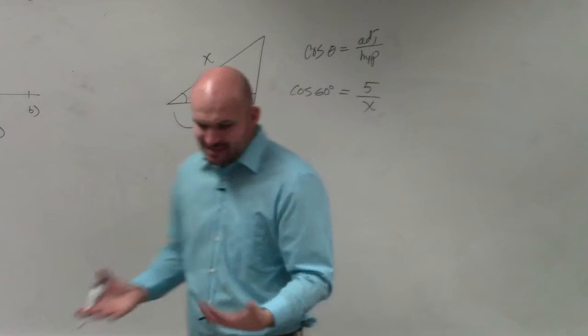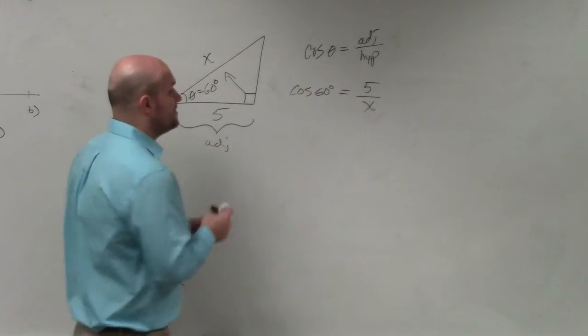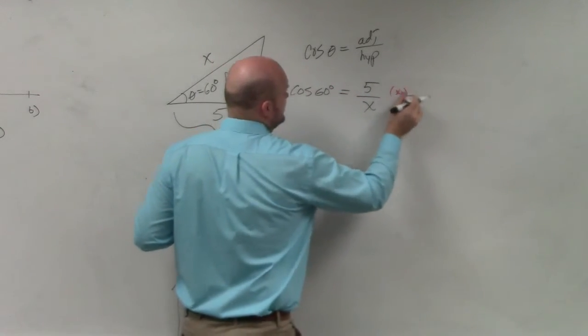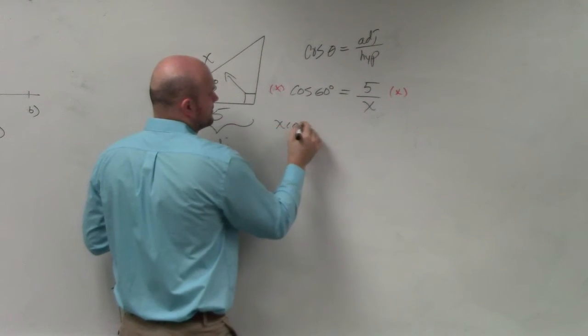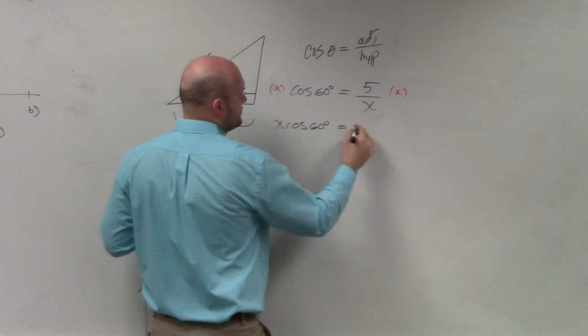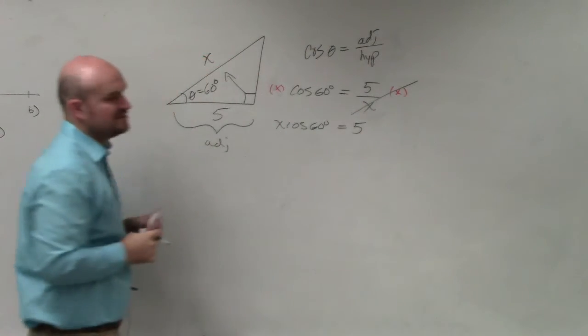So remember guys, you can't solve for x when it's in the denominator. You have to get it off the denominator. So I'll multiply by x on both sides. And therefore, I get x cosine of 60 degrees equals 5, as those divide into 1.